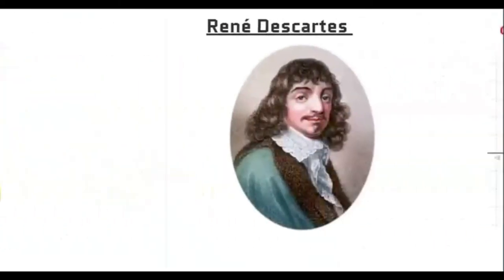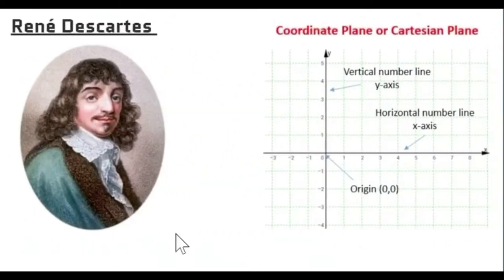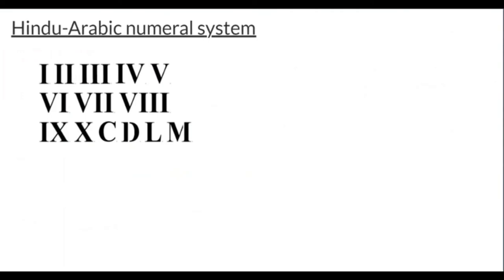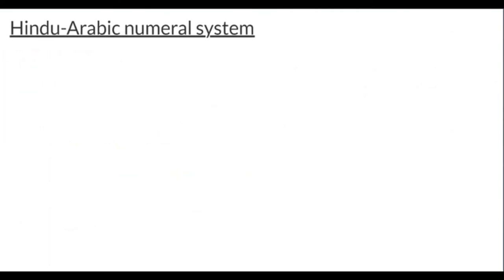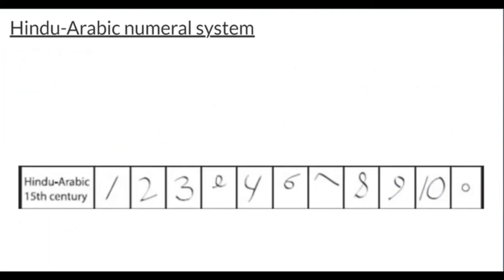The famous mathematician René Descartes founded the coordinate system and used (0, 0) as the origin. By the 15th century, the Hindu-Arabic numeral system had replaced Roman numerals in everyday life to become the most commonly used number system in the world.